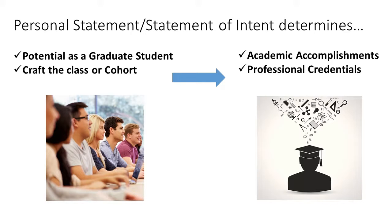Graduate school cohorts are groups of people who will typically work together throughout the duration of the program. These groups include individuals who are dynamic, collaborative, and who have diverse experiences to help create a supportive learning environment to carry students through the program. This is why it's important that you write about your most unique qualities and discuss the contribution that you will make to the program.